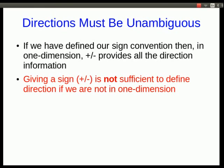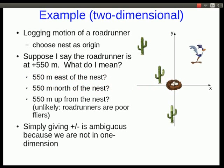But now let's think about sometimes when it isn't. That was a one-dimensional example. But if we're in a two-dimensional example then it's not sufficient. So let's say we're field biologists and we are logging the motion of a roadrunner. Maybe we might choose the nest as its origin. It's presumably near the middle of its territory. And let's say I say that the roadrunner is at plus 550 meters. Well that's ambiguous. What do I mean? That could be 550 meters east of the nest maybe, or north of the nest, or even up. So plus and minus is ambiguous here. And in general in two dimensions you never want to specify directions that way.